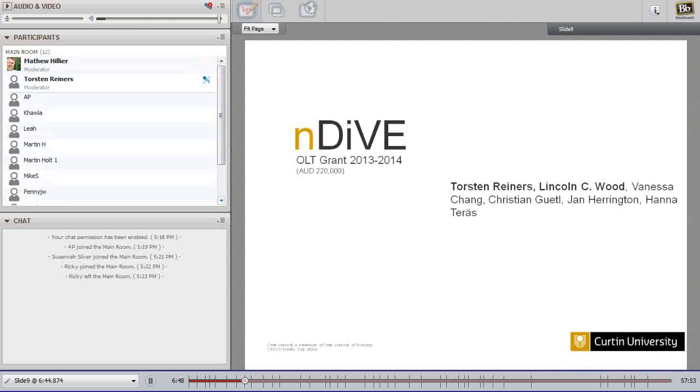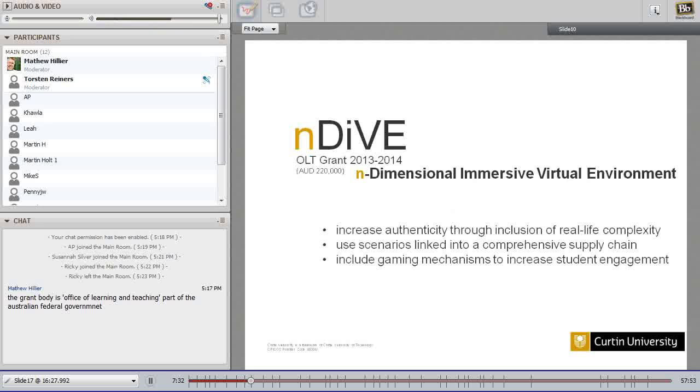That was the motivation for our project. We applied for a grant. The project is called NDIVE. Lincoln and myself are in lead. Vanessa Chang from Curtin University, Christian Gutel is from Austria at the University of Graz, Jan Harrington is at Murdoch, and Hannah Therese started from Tampere University in Finland but moved to the University of Wollongong here in Australia. So we got from a rather international team to a more local Australian team. The grant was promoted to a major research grant, so it's quite a good dimension.